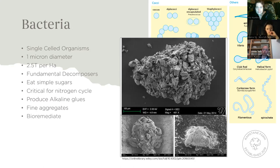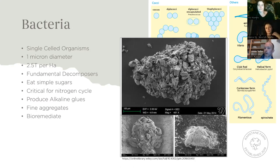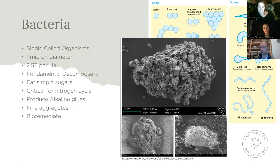Bacteria are also good at bioremediation — certain bacteria are good at breaking down toxins and chemicals. A lot of agricultural chemicals can actually feed bacteria. The issue is that many chemicals kill fungi but the bacteria can actually break them down and consume them as food, allowing them to proliferate even more. So it drives towards being more bacterially dominant — not only does it kill things, but it allows bacteria to proliferate more.